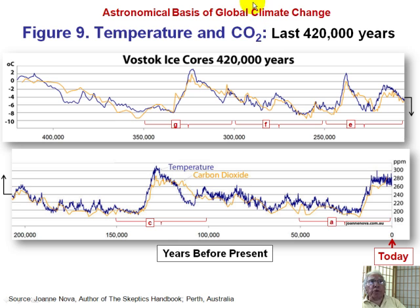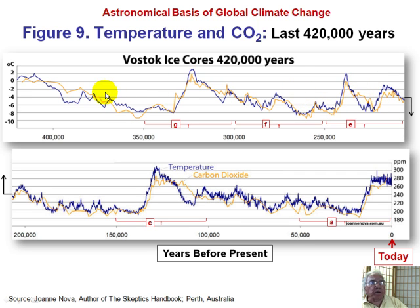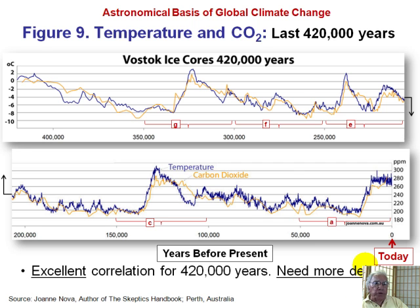Now let's look at the correlation of temperature with carbon dioxide. Both can be obtained from the ice core. Looking at the lower graph, here's our current pedestal. Carbon dioxide is the orange line, and it almost follows temperature one-for-one back 200,000 years — the correlation is excellent all the way back. You look at this slide and say: that's it, carbon dioxide is the cause of temperature. On the other hand, we're going to look at this more carefully. Notice this slight shift here. Let's expand this graph to get more detail.